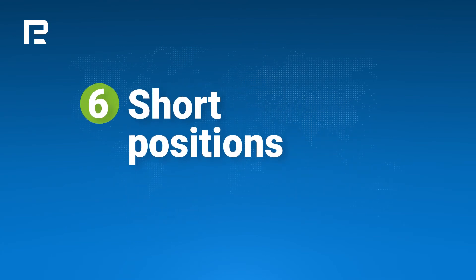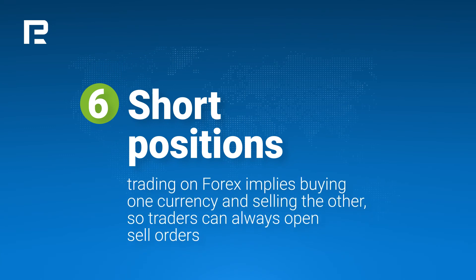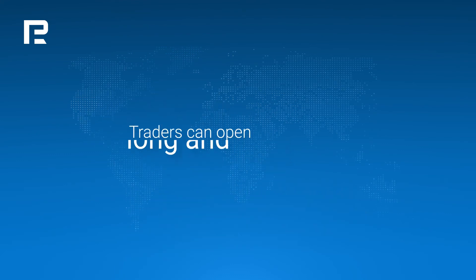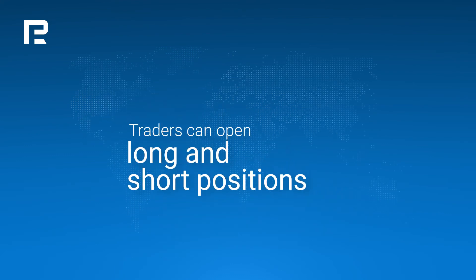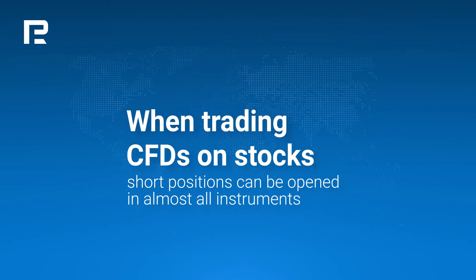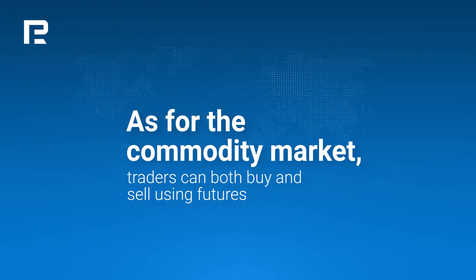The opportunity to open short positions allows traders to speculate on both falling and growing markets. Since trading on forex implies buying one currency and selling the other, traders can always open sell orders. When investing in or trading stocks, traders can open long and short positions; however, there are some stocks that allow only long positions. When trading CFDs on stocks, short positions can be opened in almost all instruments. In the commodity market, traders can both buy and sell using futures.